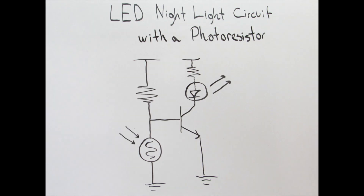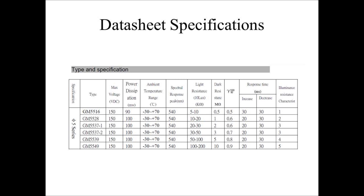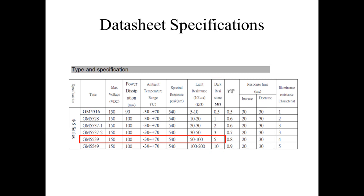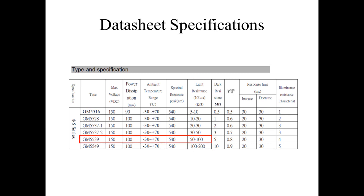Let's take a quick look at the photoresistor used in this video. Here's a table pulled from the manufacturer's datasheet. The photoresistor used is the GM5539. Two values we want to look at are the dark resistance — the resistance when it is not exposed to light — and the light resistance at 10 lux. The dark resistance is straightforward: when there is no light, the resistance is equivalent to 5 mega ohms. The light resistance at 10 lux is between 50 and 100 kilo ohms.